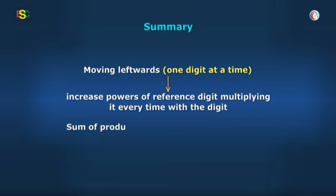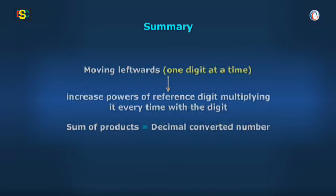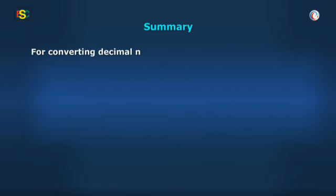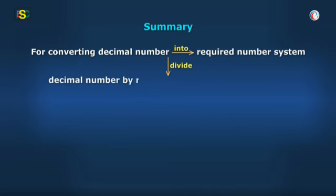The sum of the products will be the decimal converted number. And for converting any decimal number into the required number of the number system, we divide the decimal number by the reference digit and find the remainder.